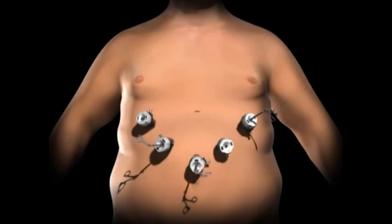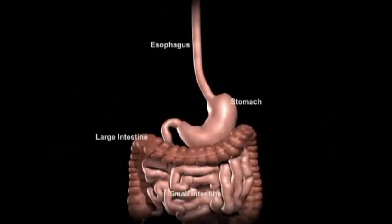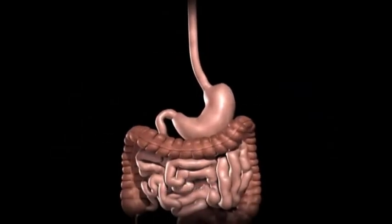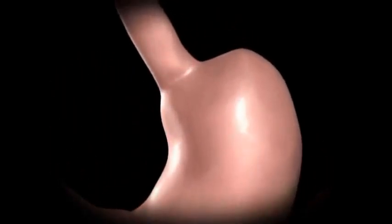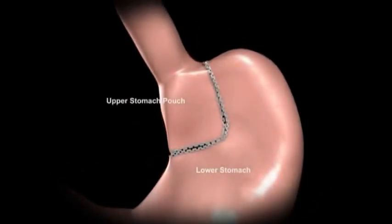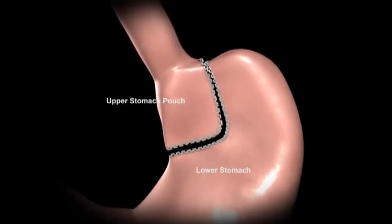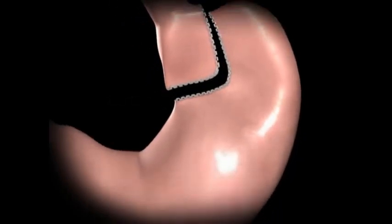The surgeon examines the abdominal cavity using a laparoscope or video camera. A small stomach pouch is created using a stapling device. This smaller stomach pouch restricts the amount of food that can be eaten before feeling full.